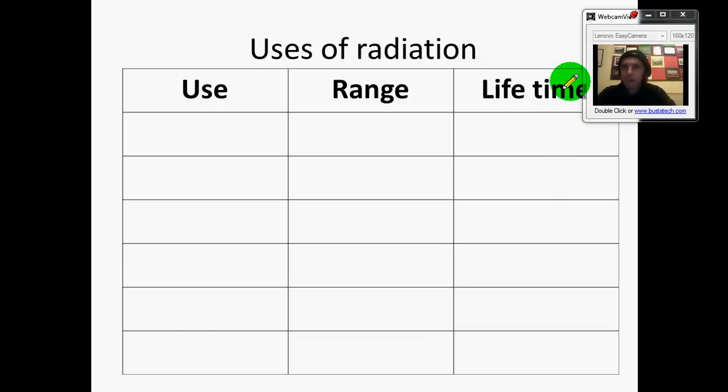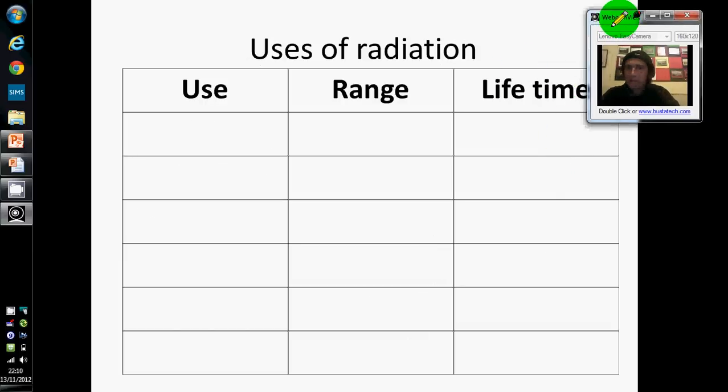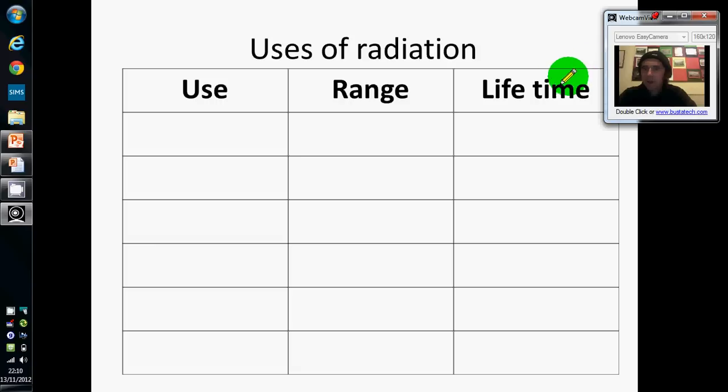Okay this little table is something that I want you to do specifically to be ready for next lesson. I'm going to put into this table the uses of radiation and I want you to think about for each one what sort of range you want the radiation to have and then what sort of lifetime you want it to have so that we can match it to some actual sources and say which one will be best for each job.